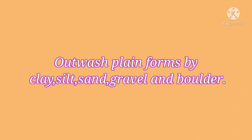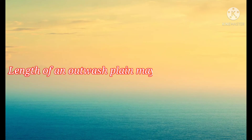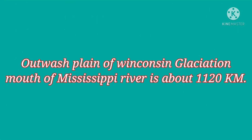Outwash planes are constructed by different sizes of material such as boulder, gravel, silt, and clay. The thickness of an outwash plane can be 100 meters at the edge of a glacier, but is usually much less. The length may extend many kilometers — for example, the outwash plane from Wisconsin glaciation can be traced to the mouth of the Mississippi River, which is about 1,120 kilometers from the nearest glacial terminus.